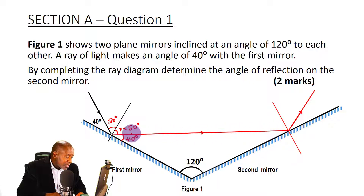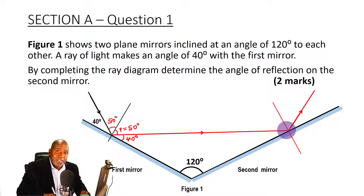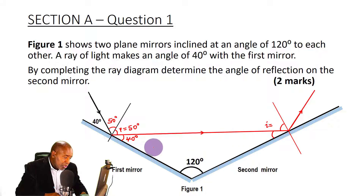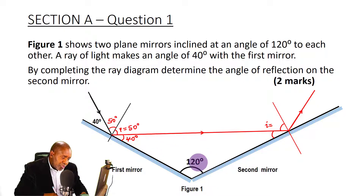The ray that bounces off the surface after reflection is called the reflected ray; the ray that approaches the surface is called the incident ray. We do not yet know the angle of incidence at the second mirror, but we can determine it using the triangle formed. The sum of angles in a triangle adds up to 180 degrees. Knowing this angle — 50 degrees plus 110 degrees gives 160 degrees — we subtract 160 from 180 and get this angle here to be 20 degrees.